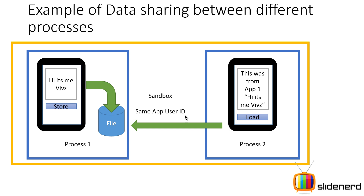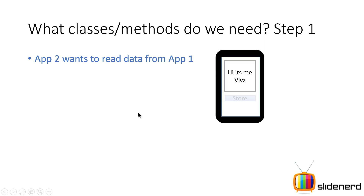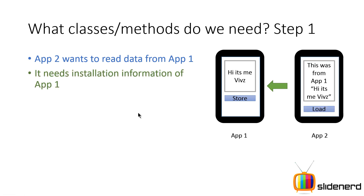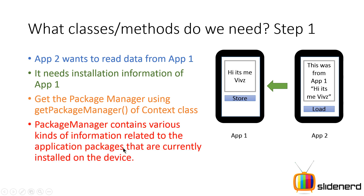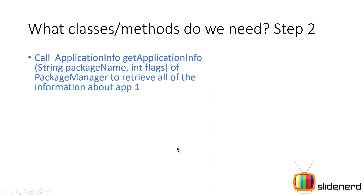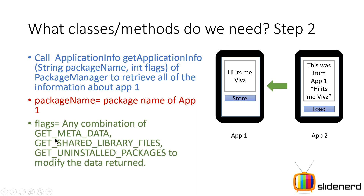So which classes or methods do we need? App Two wants to read data from App One. The first thing you need from App Two is the installation information of App One — which folder it's installed in and where the files are. Use the PackageManager class, obtained via getPackageManager() from your context. This contains information related to the various application packages currently installed on your device. Step two is to call getApplicationInfo() from your PackageManager object, specifying the package name of App One and the appropriate flags.